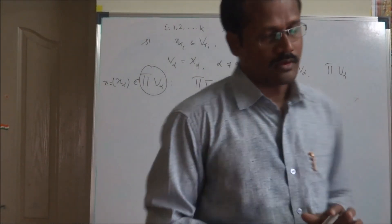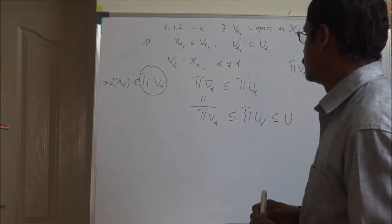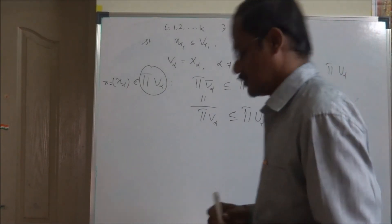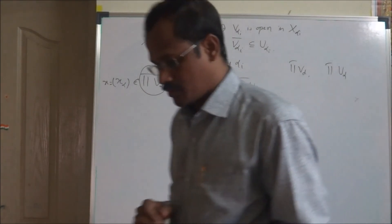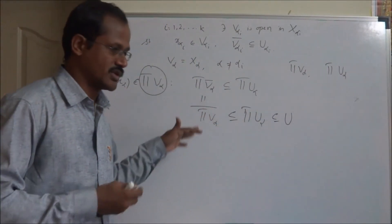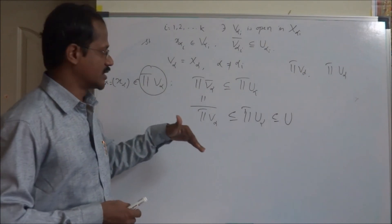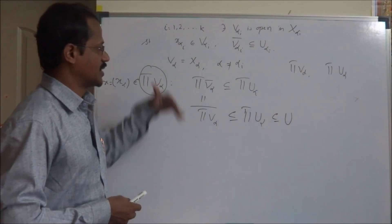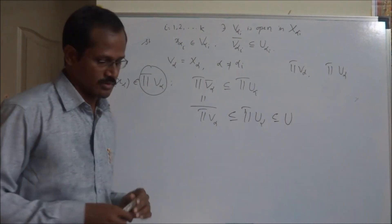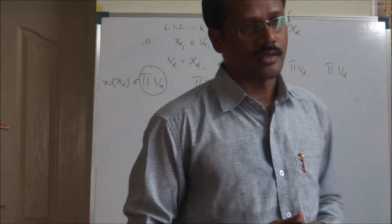That's all. We have proved the result completely: we first showed the product is a T1 space, and then proved the equivalent neighborhood condition for regularity. I hope you understand this result. Thank you.